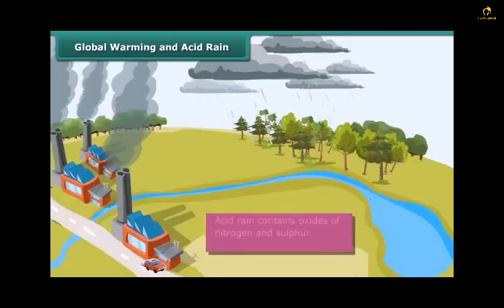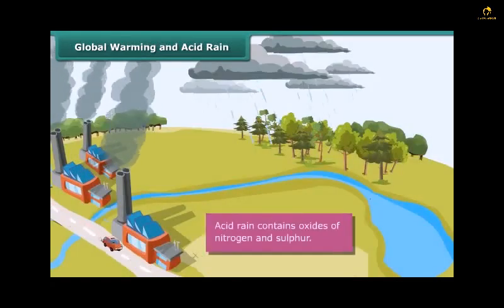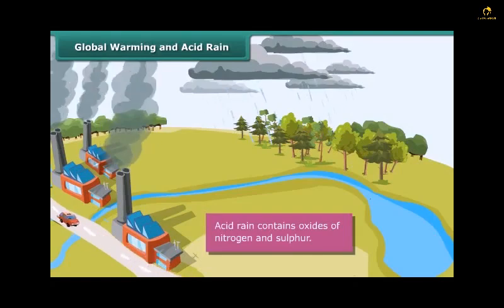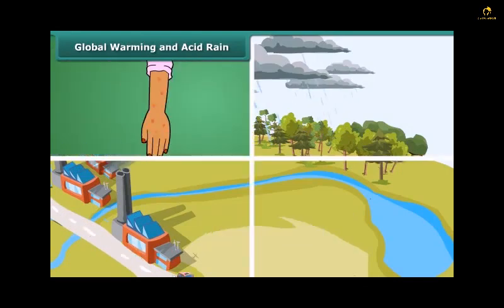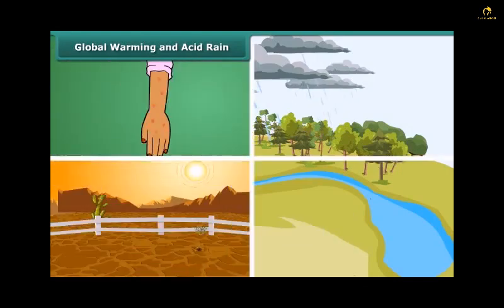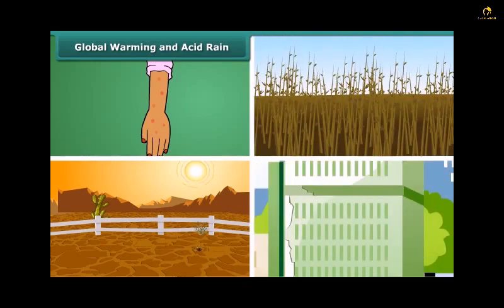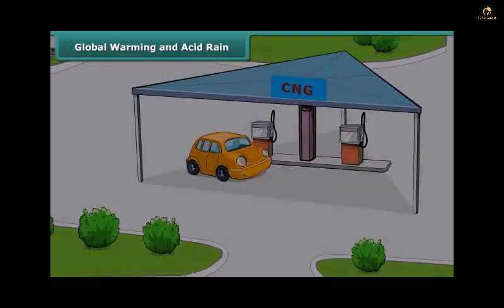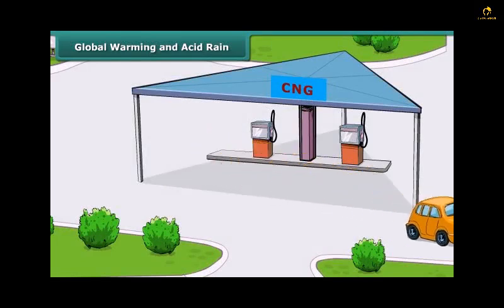Another harmful effect of air pollution is acid rain. Rain water that contains oxides of sulfur and nitrogen released from the industries and petrol engines in dissolved state may cause huge damage to skin, soil, standing crops and buildings.